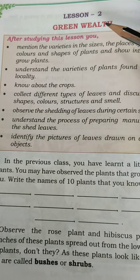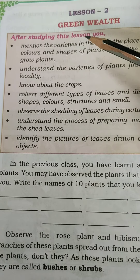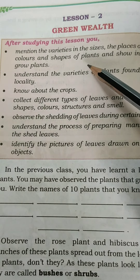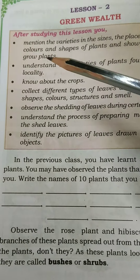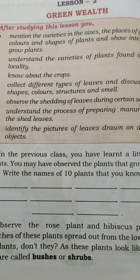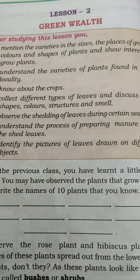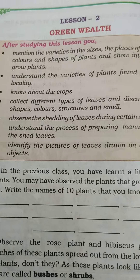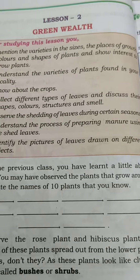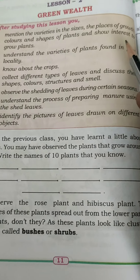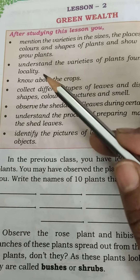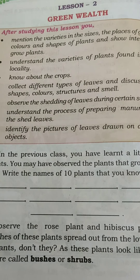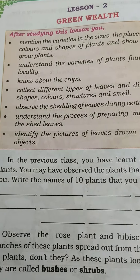Lesson two: Green Wealth. Children, after studying this lesson, you will mention the varieties in the sizes and places of growth, colors and shapes of plants, and show interest to grow plants. You will mention varieties of sizes — big or small — what colors and what shapes your plants are, and mention your interest in growing plants. Understand the varieties of plants found in your locality.